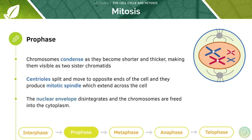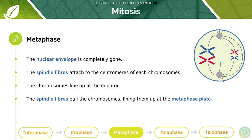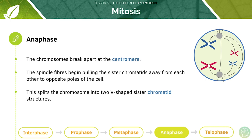During prophase, centrioles — tiny organelles — will split and move to opposite ends of the cell. The centrioles produce special protein fibres called mitotic spindles which extend across the cell. At the end of prophase we have visible chromosomes, a spindle is formed, and a near-broken nuclear envelope. We then move into metaphase — this is when the nuclear envelope is gone, and we have spindle fibre attachment, and the chromosomes line up at the metaphase plate or the equator. In anaphase, chromosomes break apart at the centromere and the spindle fibres pull the sister chromatids to opposite sides of the cell, splitting the chromosome into two V-shaped sister chromatid structures.